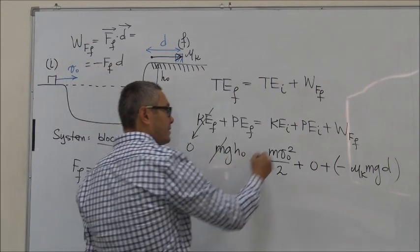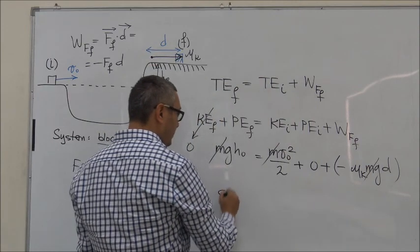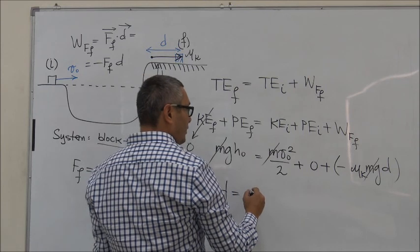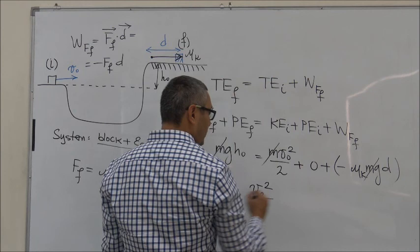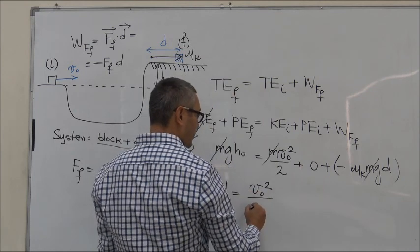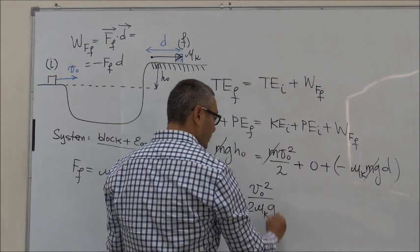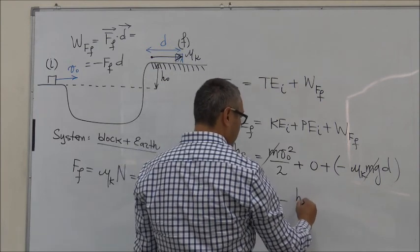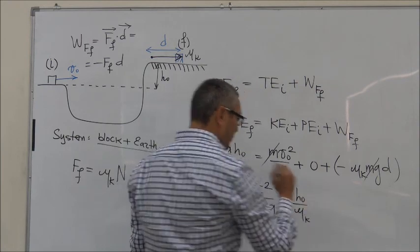Well, first of all, let's cancel out mass. Then D is equal to V0 squared over 2 mu k g minus H0 over mu k.